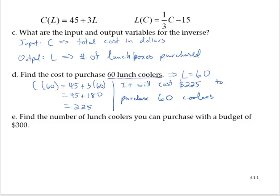Part E: Find the number of lunch coolers you can purchase with a budget of $300. Now in the past, what we would have done is substitute 300 for C(L) and solved for L. But since we have an inverse function, we can just say this implies that C = 300.